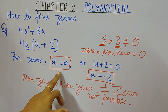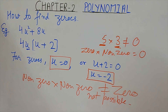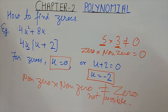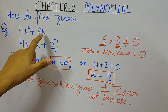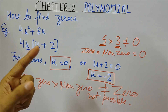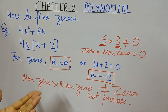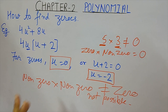In our next video we will verify the relationship between the coefficients and the zeros — the coefficients a, b, c of the quadratic polynomial and the zeros we find. Stay tuned, enjoy life, enjoy maths — it's easy!